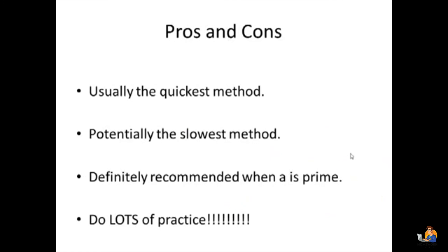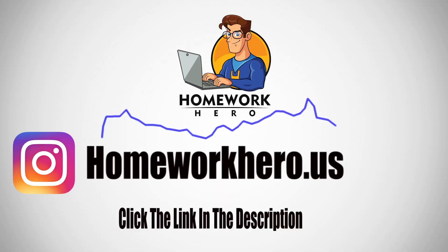Some pros and cons of the trial and error method: it's usually the quickest method when you get good at it, and it's definitely quick to try those first few combinations — oftentimes those will work. However, it could potentially be the slowest method if you don't come up with smart guesses and if you're out of practice. It's definitely recommended when the leading coefficient is prime — like 3x squared or 7x squared. And as with any method, you'd want to do a lot of practice problems.